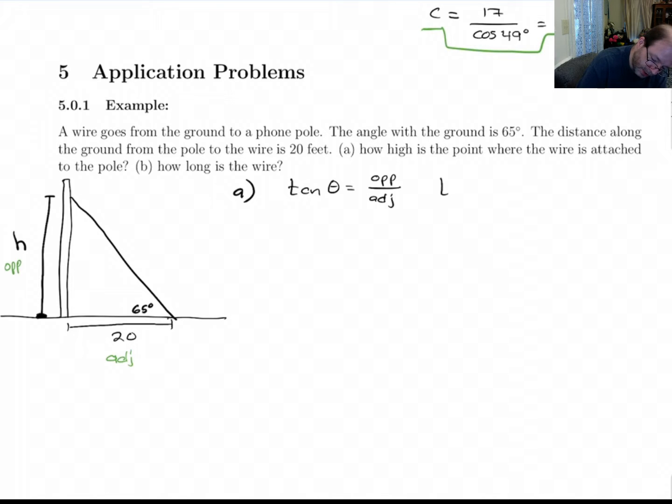So tan theta is opposite over adjacent. So plugging into here, we get tan of 65 degrees is opposite, which is h, over adjacent, which is 20. So if we solve that out, we get h is 20 tan 65 degrees. And if I put that into my calculator, tan 65 is 2.1 something times 20, I get 42.89. They didn't tell us how to round, so I'm just going to leave it there. 42.89 feet.